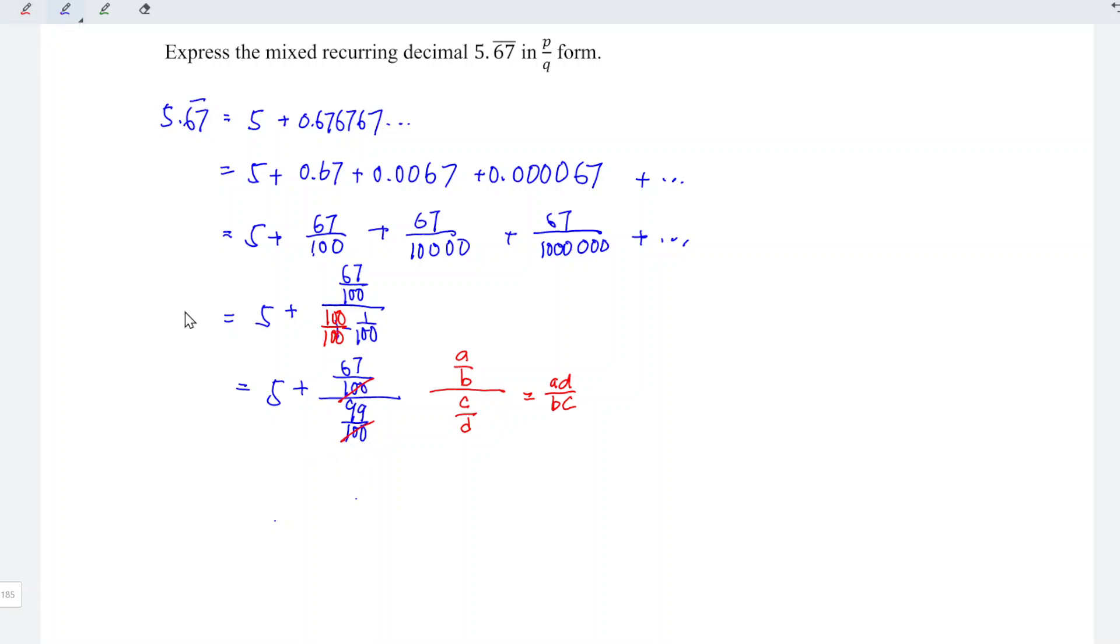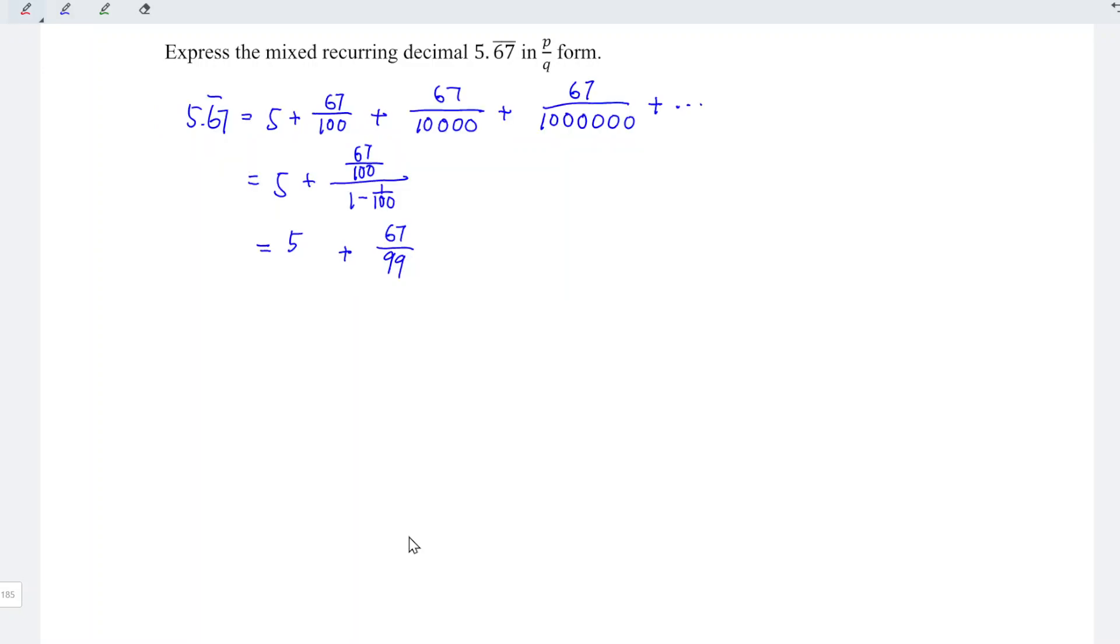So this results in 5 plus 67 over 99. Let's standardize the denominator to evaluate this summation. We know that 5 can also be written as 5 over 1, but what we need is 99.